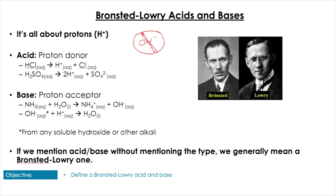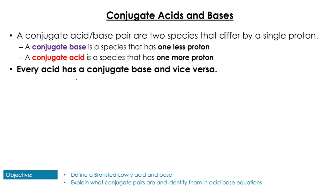The next type is Bronsted-Lowry acids and bases. What these two did independently was remove the requirement of defining a base as OH⁻, allowing the definition to revolve around just H⁺ — just protons. This is helpful because some things act like bases but don't contain the OH⁻ ion. So the acid is a proton donor, and the base is a proton acceptor, meaning something like ammonia can be seen as a base.